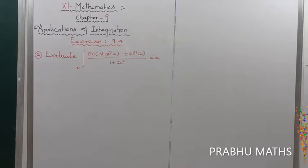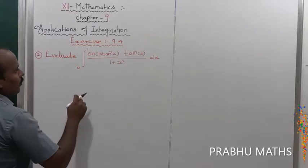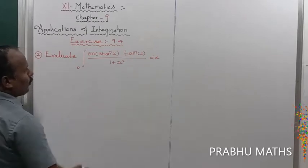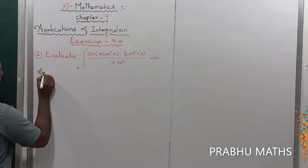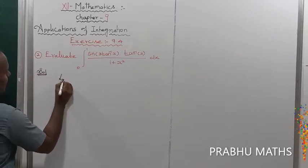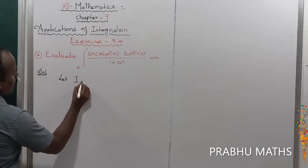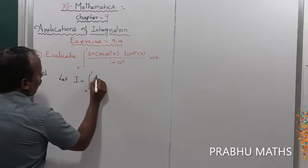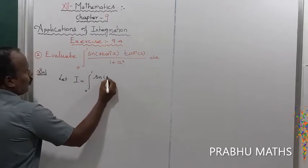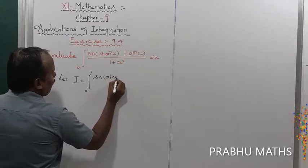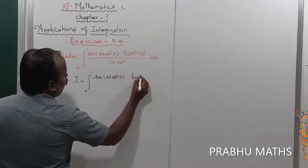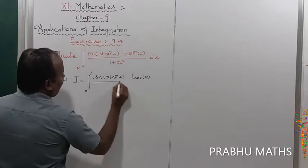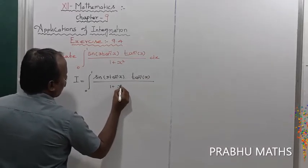The given integral I equals the integral from 0 to 1 of sin(3·tan⁻¹x) · tan⁻¹x divided by (1 + x²), dx. We need to evaluate this definite integral using the substitution method first, and then apply Bernoulli's formula.